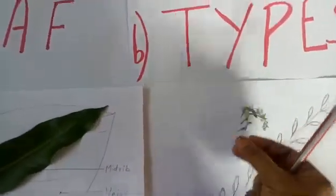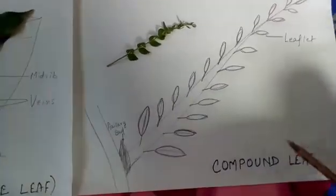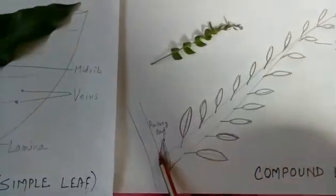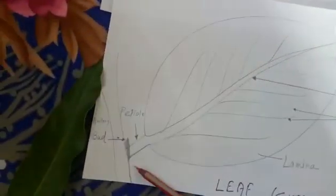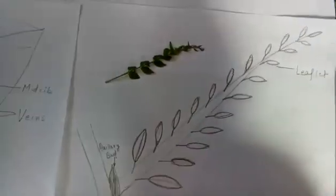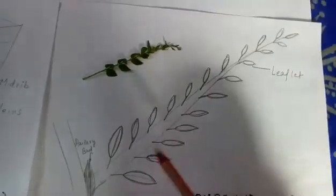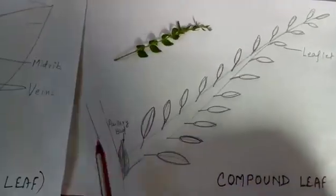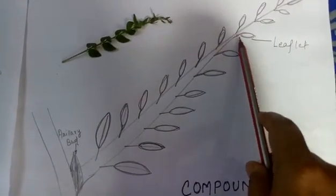To understand the difference between a simple leaf and a compound leaf, we must first understand the difference between a leaf and a leaflet. A leaf is a part of a plant at the axis of which a bud comes out. As shown in the figure, this whole portion is one leaf. The tiny parts within it are leaflets. At the axis of a leaf, a bud comes out, but at the axis of a leaflet, a bud cannot come out. This is the main difference between a leaf and a leaflet.